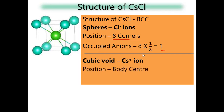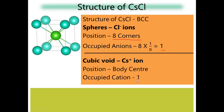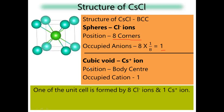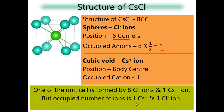Cs⁺ ion is the cubic void present at the body center, so the body center atom is fully occupied. Occupied cation equals 1. The cesium chloride unit cell is formed by 8 Cl⁻ ions and 1 Cs⁺ ion. Occupied: 1 Cs⁺ and 1 Cl⁻. Hence, cesium chloride crystal structure is neutral. Neutrality depends on Z value, not total number of atoms.